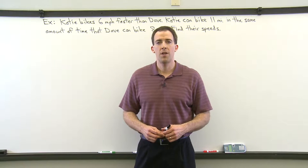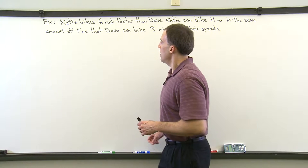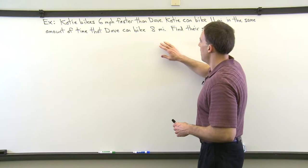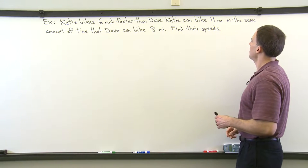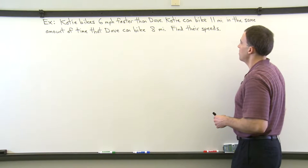This is a distance equals rate times time problem. That's another application of proportions. It says Katie bikes 6 miles per hour faster than Dave. Katie can bike 11 miles in the same amount of time that Dave can bike 8 miles. Find their speeds.